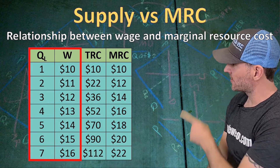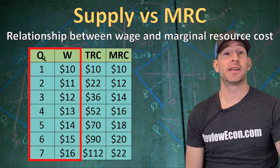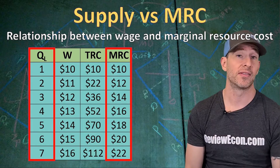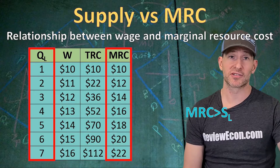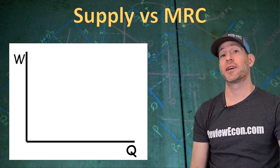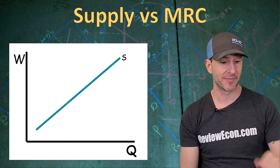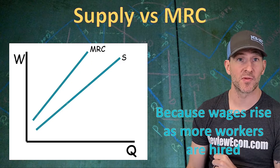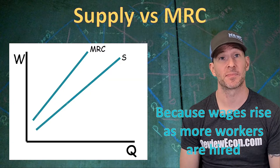If we graph the quantity of labor hired with the wage, that gives us the supply of labor for this firm. And when we graph the quantity of labor with the marginal resource cost, that gives us our marginal resource cost curve. The marginal resource cost is going to be greater than the supply of labor. On the graph, we have quantity of labor on the x-axis and wage on the y-axis. We put in the upward sloping supply of labor — that's both the market supply and the firm supply — and above it, the higher marginal resource cost curve, because as the firm hires more workers, wages increase on all workers hired.